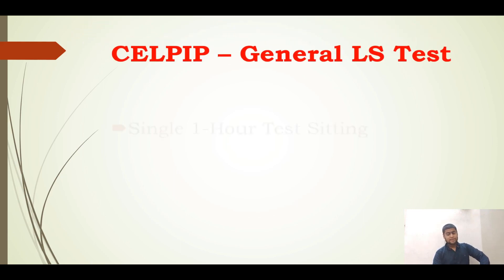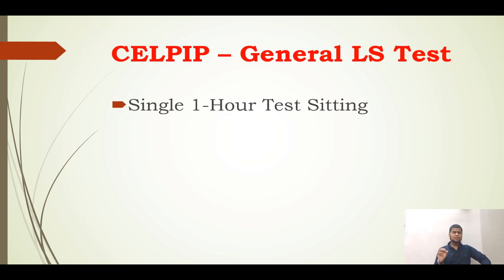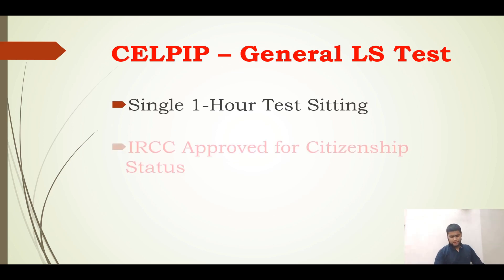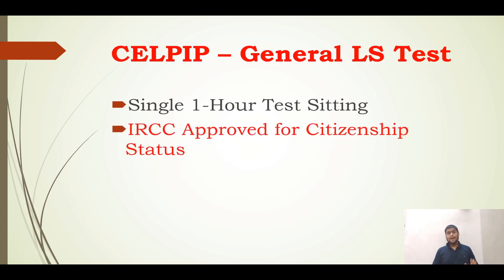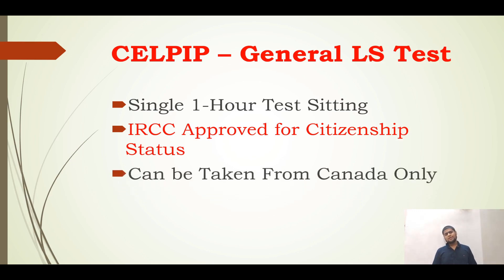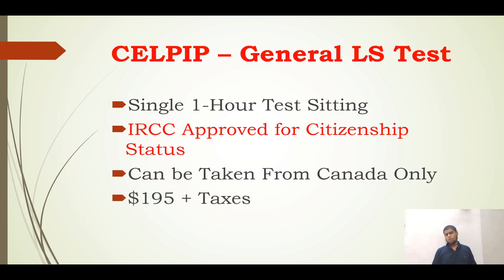Now let us talk about the CELPIP General LS Test. This is completed in just one hour of sitting, and this examination is approved by IRCC for citizenship of Canada. This examination can only be taken from within Canada — there are no outside centers. The fees for this examination are approximately $195, and with taxes the total amount is between $210 to $230.